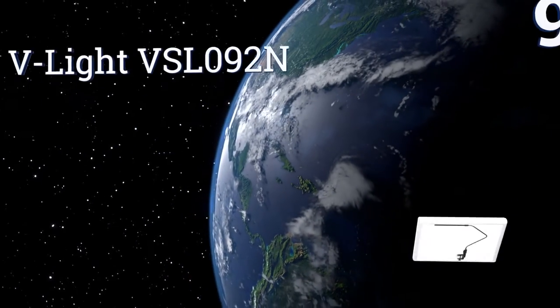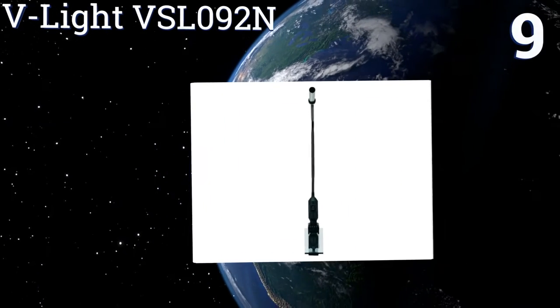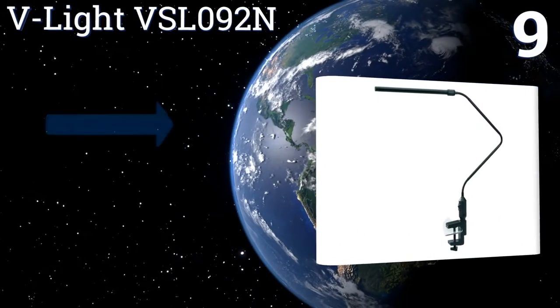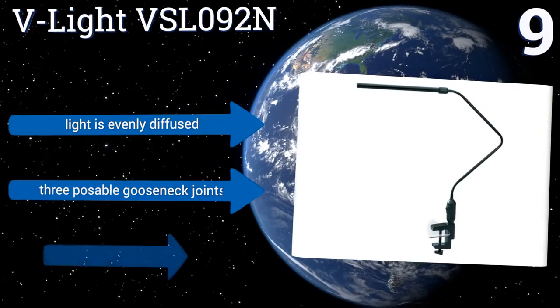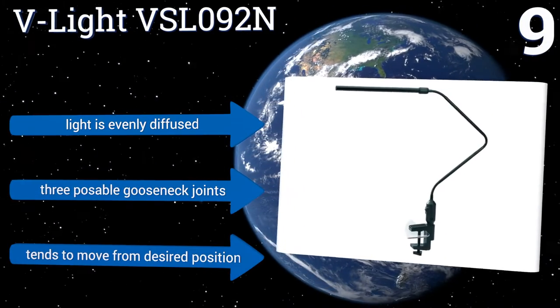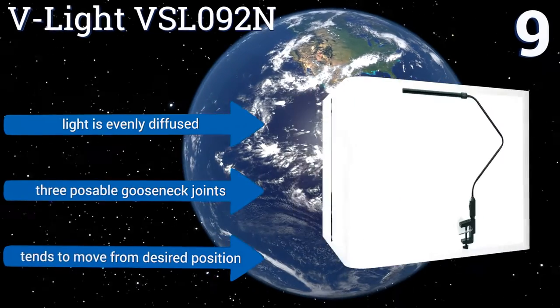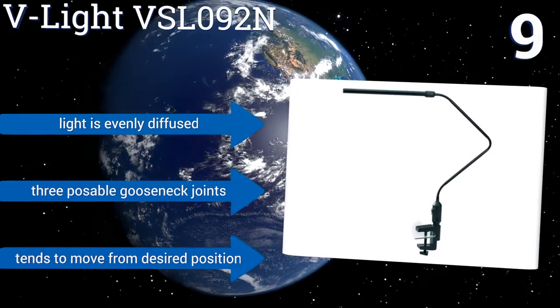At number 9, enjoy bright, energy-efficient LED lighting in any space with the V-Lite VSL092N, featuring an extra long head that's ideal for larger work areas. Its wide-opening clamp is simple to attach to just about any surface and keeps its footprint to a minimum. The light is evenly diffused and it offers three poseable gooseneck joints, but it tends to move from the desired position.